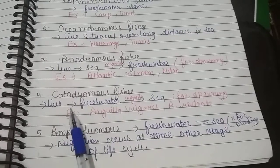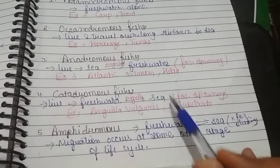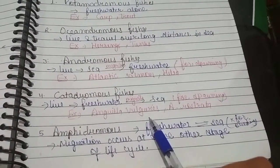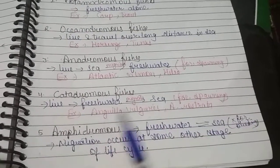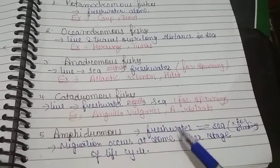Catadromous fishes live in freshwater and migrate to sea for spawning. Examples: Anguilla vulgaris and Anguilla rostrata. Amphidromous fishes